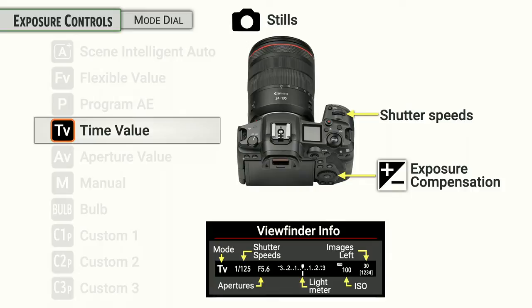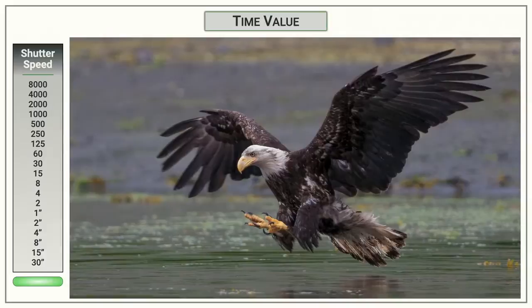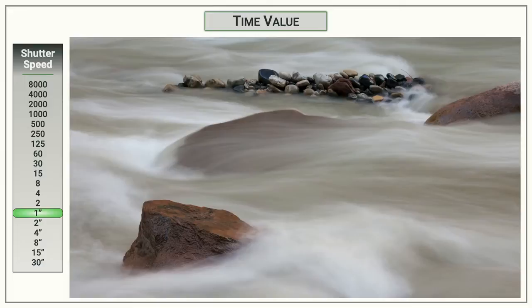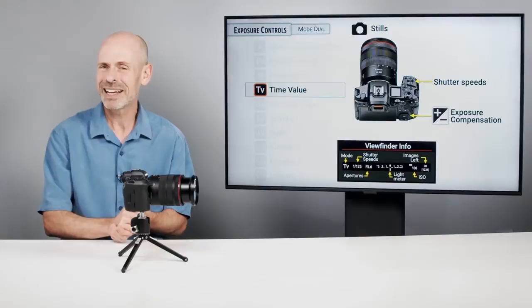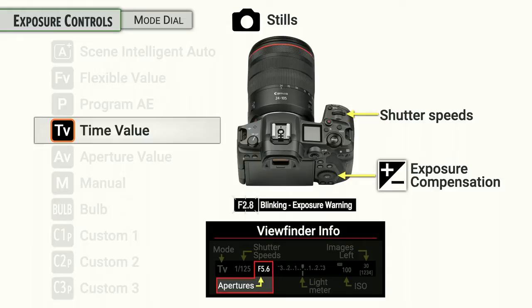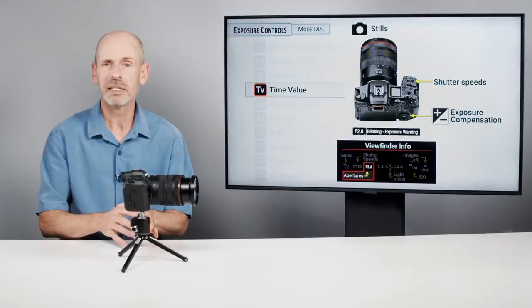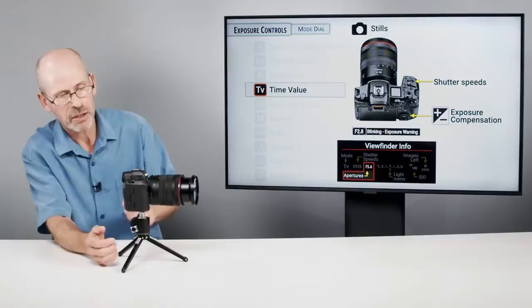Next up is Time Value, also known as shutter priority mode. This can be good for situations where you know you need a specific shutter speed — like a thousandth of a second to stop the motion of an eagle grabbing a fish, or one second to blur water moving down a river. The camera figures out the equation using the aperture. There is a problem with Time Value though: you can easily select a shutter speed outside the range acceptable for the lighting, and a blinking aperture will warn you that your aperture is not wide enough.